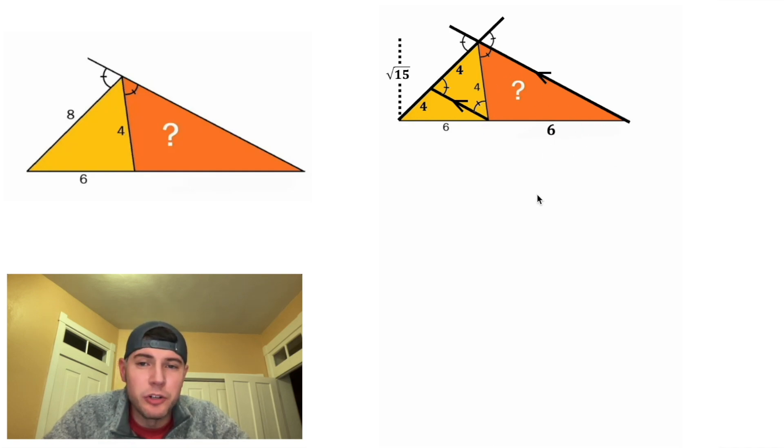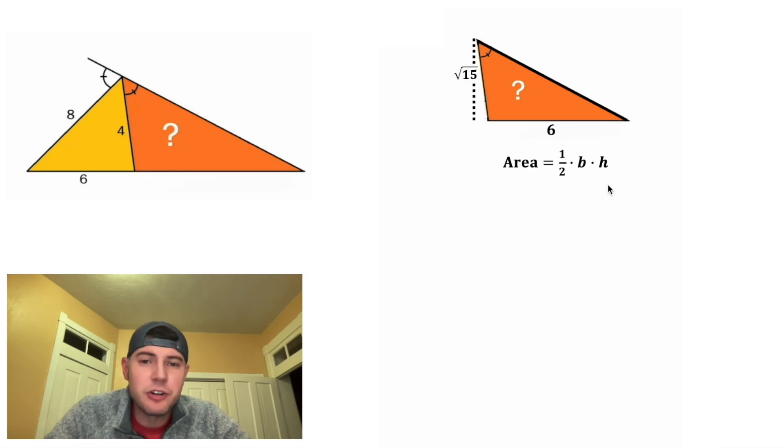And now we're ready to find the area of our orange triangle. This height is the same as the height of our orange triangle. The area of our triangle is 1 half base times height, where the base is equal to 6, and the height is equal to square root of 15. 1 half of 6 is equal to 3, and that's going to be multiplied by the square root of 15. And that's the answer to our question. We can put a box around it.